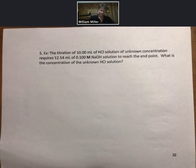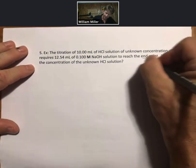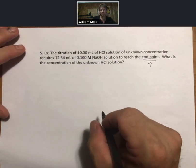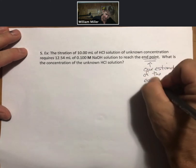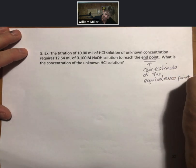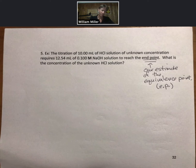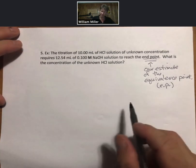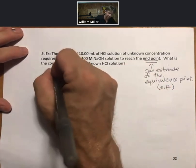Here's a typical titration problem. The titration of 10 milliliters of hydrochloric acid solution of unknown concentration requires 12.54 milliliters of 0.100 molar sodium hydroxide solution to reach the end point. The end point is going to be our estimate of the equivalence point. More often than not, we do use the abbreviation EP for the equivalence point. In order to do this, it will help to have a balanced reaction.